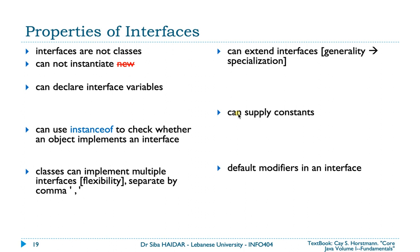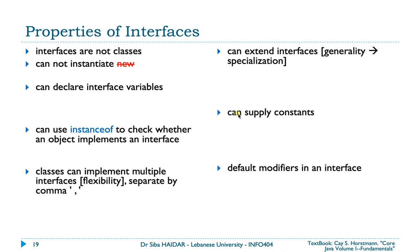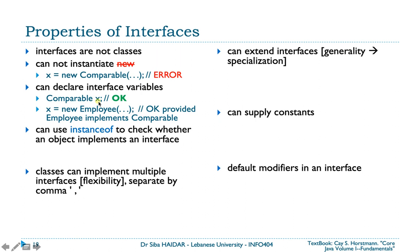As we have seen with the previous section, Comparable and Comparator interfaces are not classes — they cannot therefore be instantiated. You cannot use the operator 'new' with an interface. However, you can declare an interface variable. It is totally okay to declare a Comparable variable x and then assign to x any instance of any class that implements the Comparable interface.